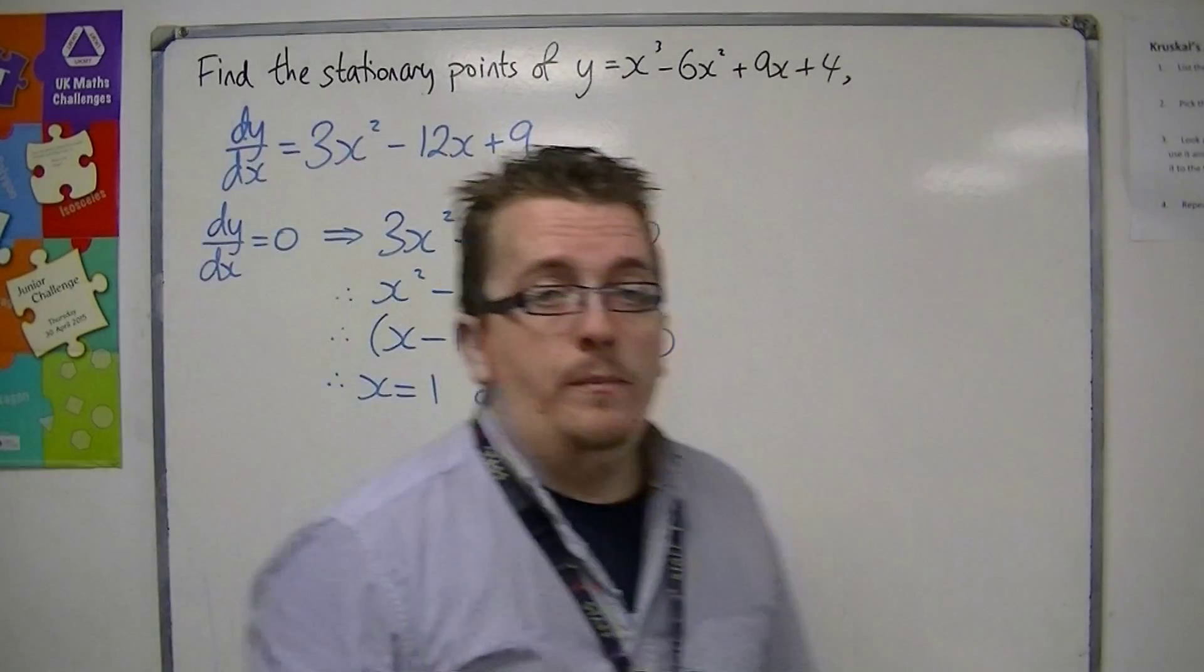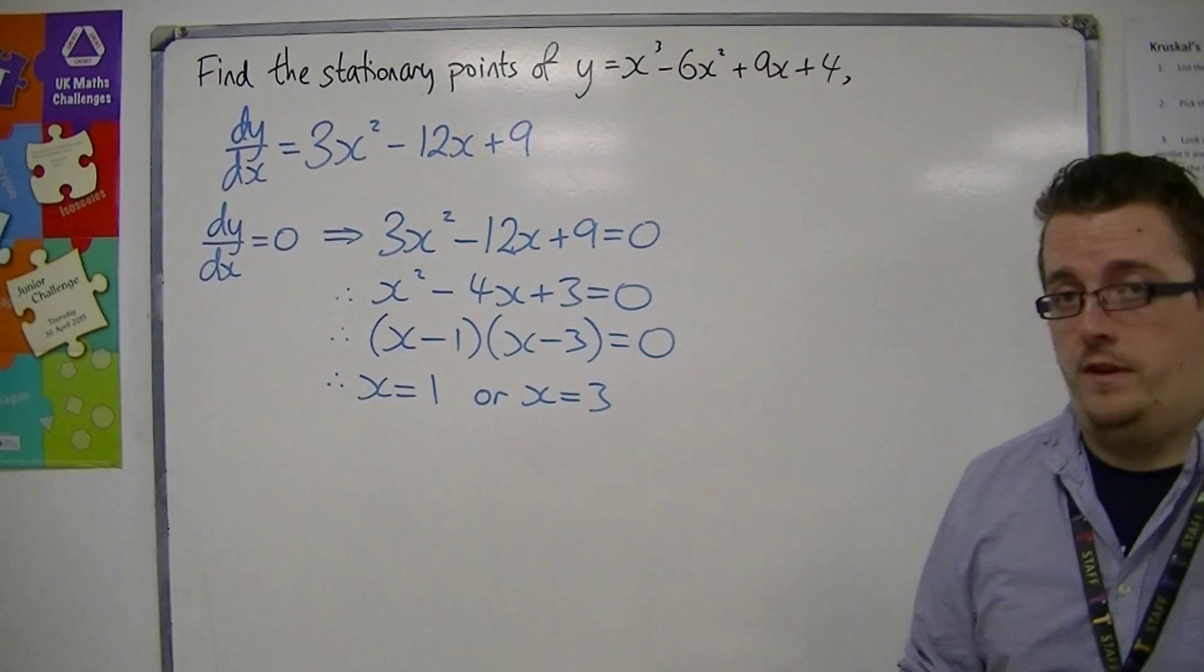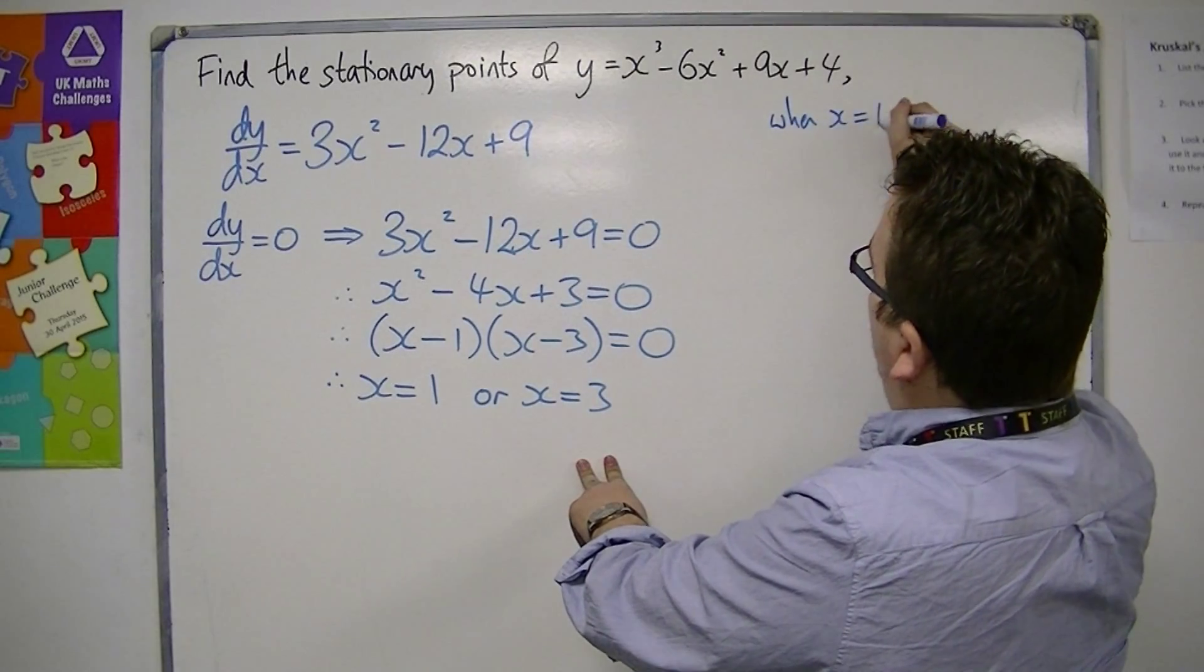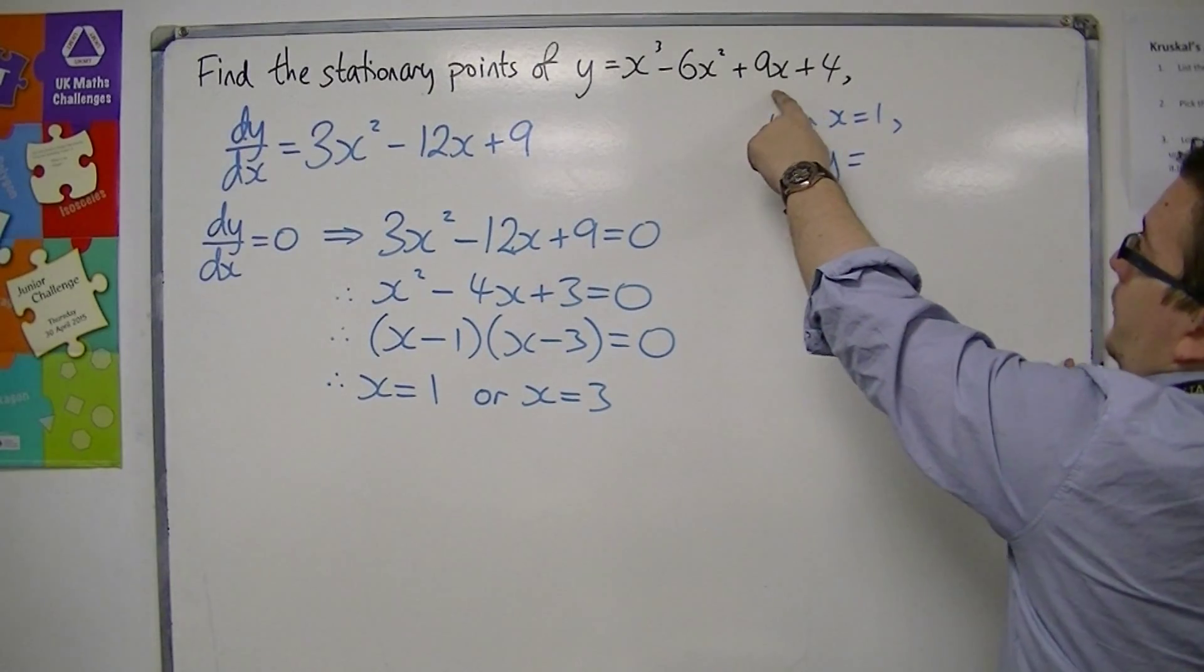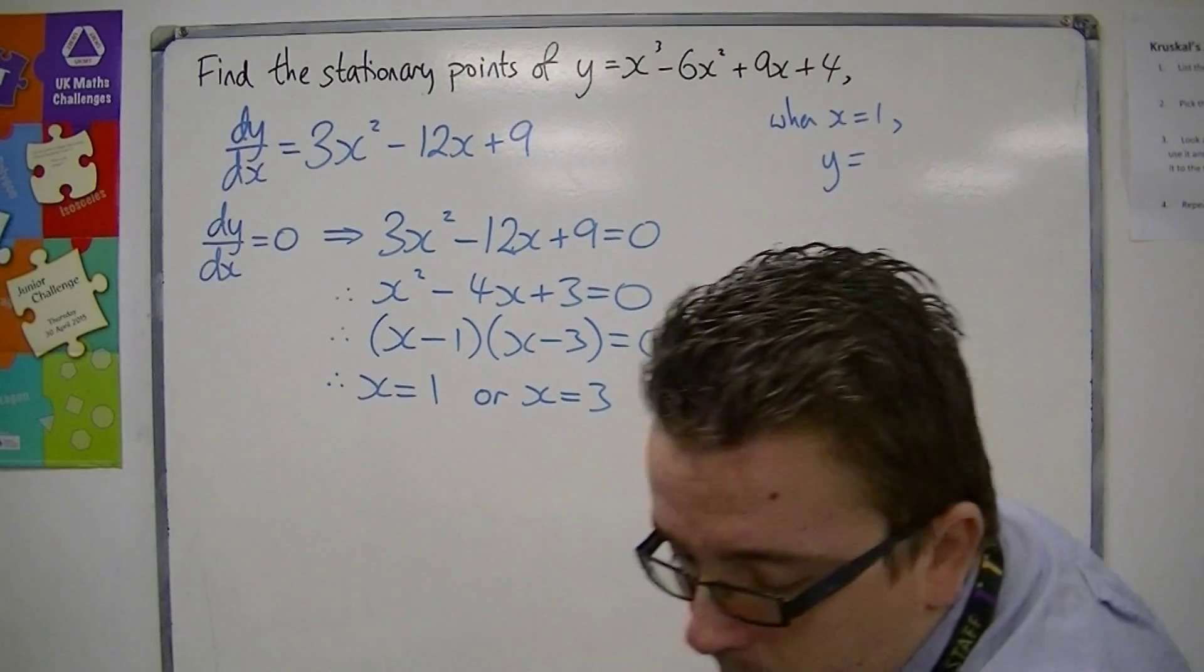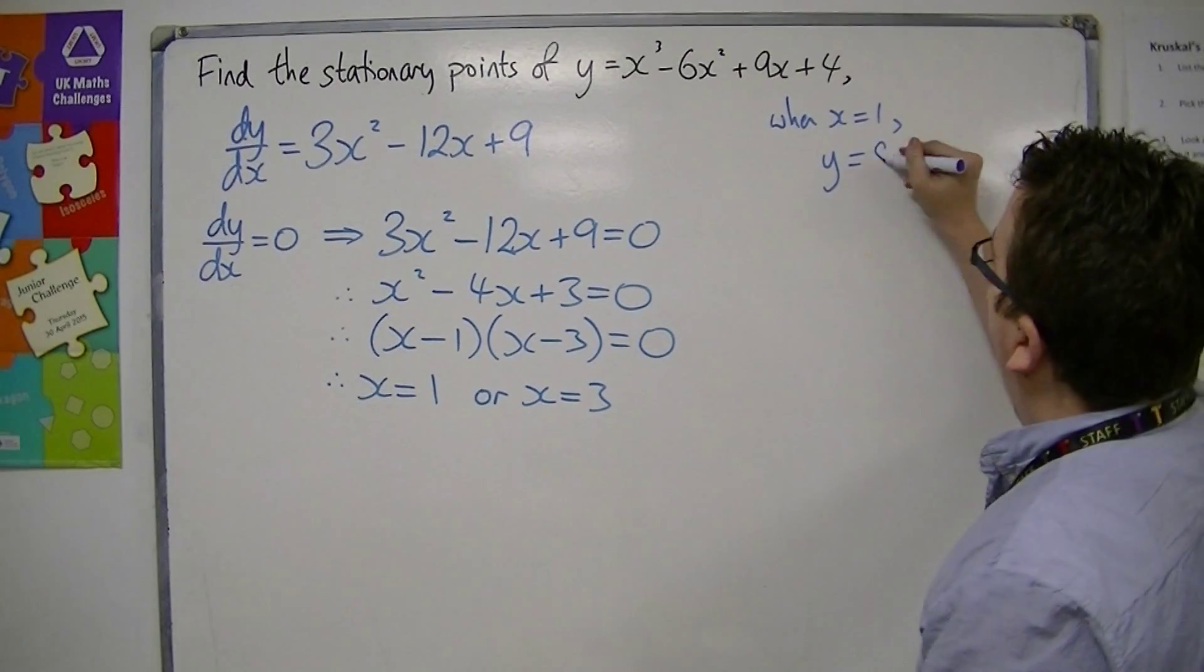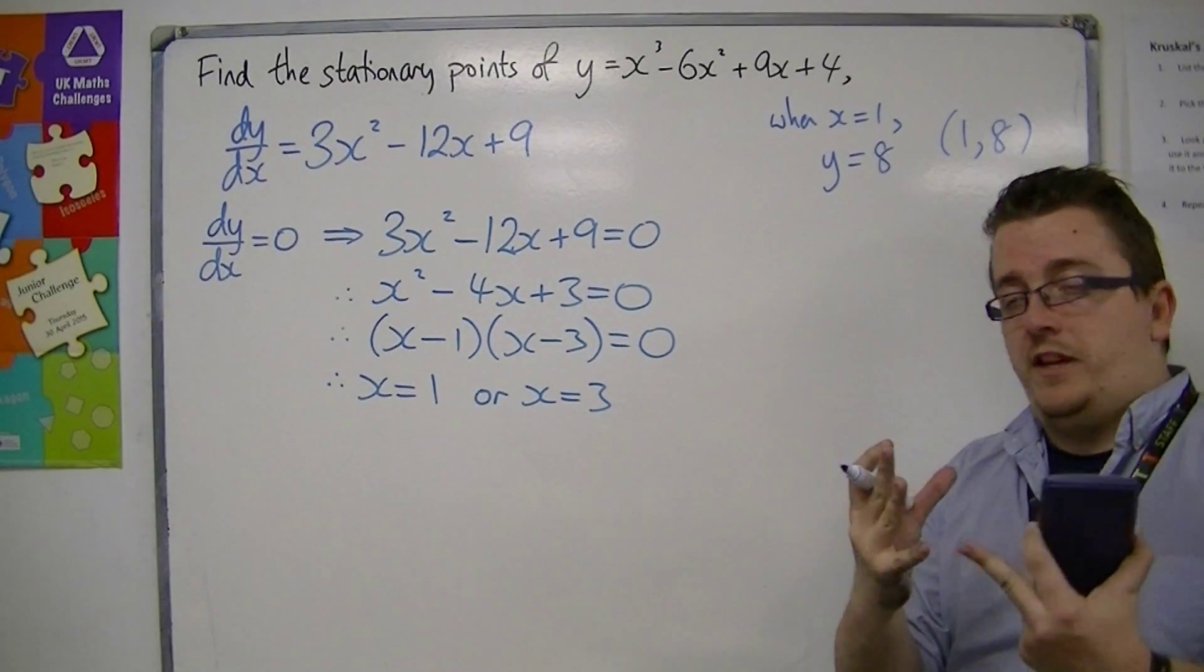So then, we might want to identify the y-coordinate. This tells us the x-coordinate. When x equals 1, y equals 1 - 6 + 9 + 4. I'm going to do this on a calculator just to make sure I don't go wrong. 1 - 6 + 9 + 4 is 8. So (1, 8) is the coordinates of one of the stationary points.